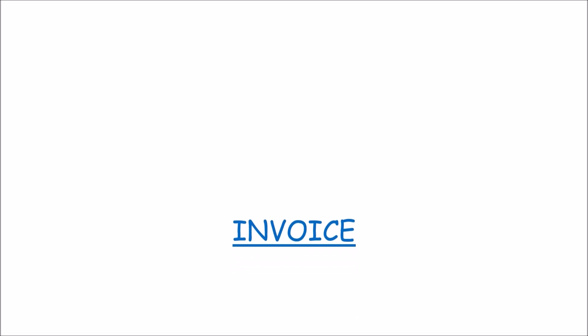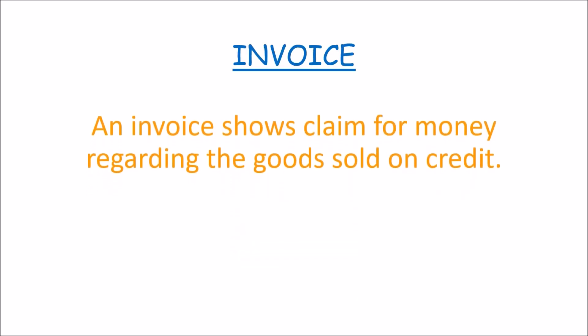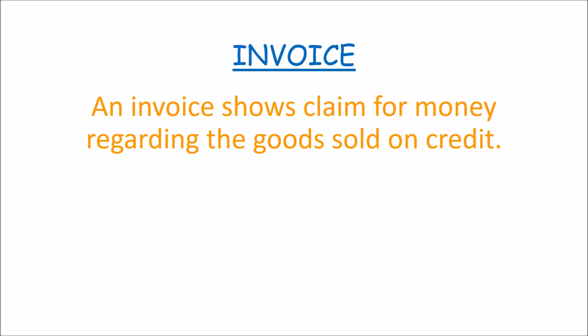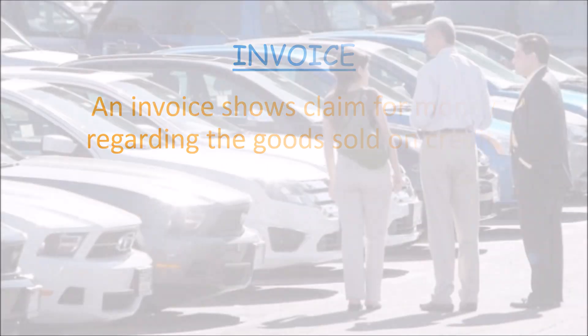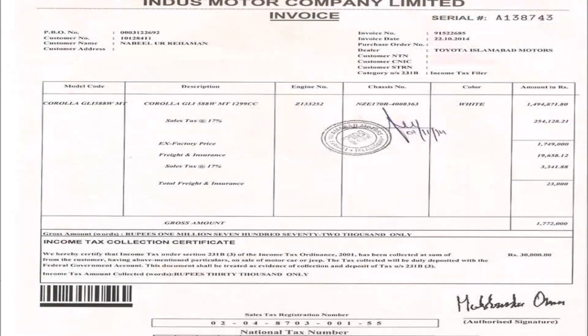An invoice shows a claim for money regarding goods sold on credit. Let's say I sell cars to organizations. When I sell cars to one of my customers and the customer does not pay me immediately, that becomes a credit sale. And so, in order to claim for my money from the customer, I'll issue an invoice to my customer.